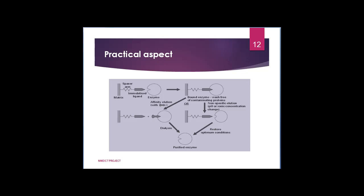Now we will discuss practically how we can perform this experiment. A column containing matrices attached with spacer arm and immobilized ligand is equilibrated with mobile phase. Later, the enzyme you need to separate from the mixture is passed through the affinity column. This allows the enzyme to bind to the ligand, and all other unwanted material or those without affinity for the ligand will move with the mobile phase. The enzyme bound to the ligand will then be eluted from the column by using two methods: affinity elution and non-specific elution.